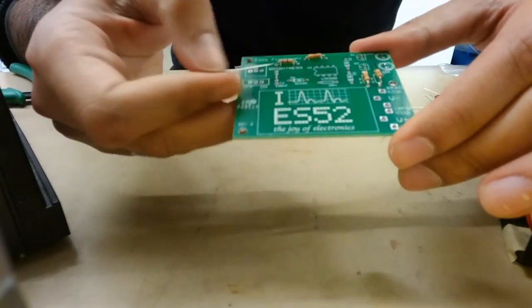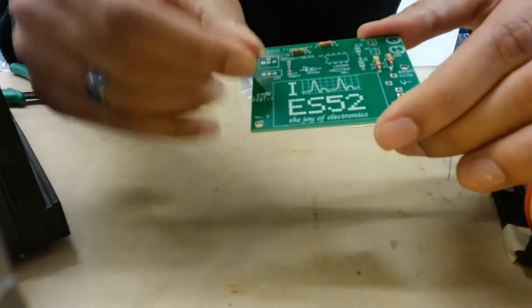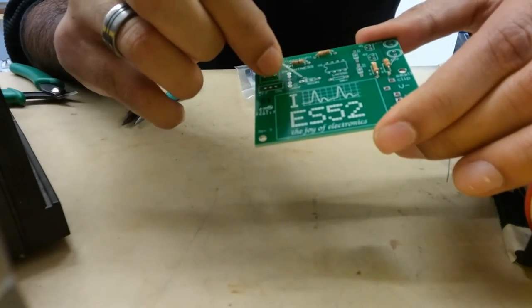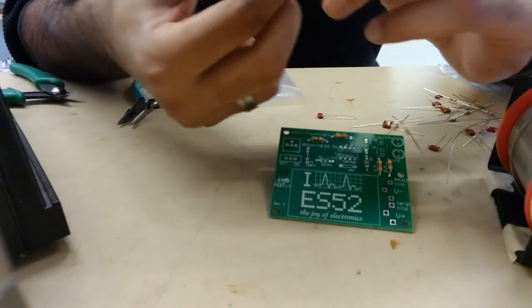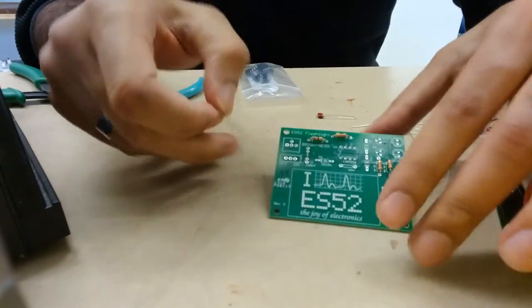Notice that there's a tiny bar on the silk screen, the label for the printed circuit board. So make sure that the bar on the diode, the little black bar, lines up with that bar. If you do that, you'll be all set.